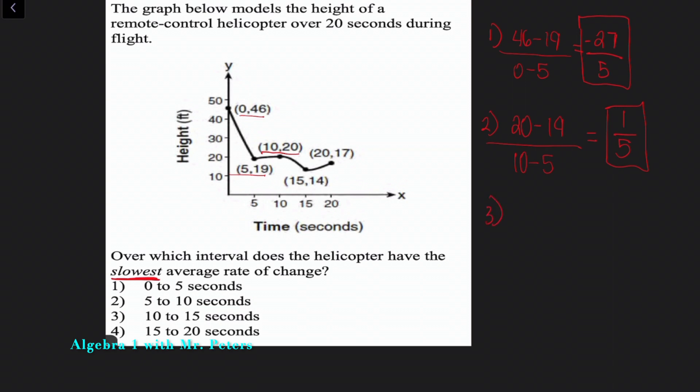So now we continue this process. We go on to answer choice three, ten to fifteen seconds. So now I do twenty minus fourteen all over ten minus fifteen. So this is going to give me a positive six on top, negative five on bottom. So we're going to have a negative six over five.